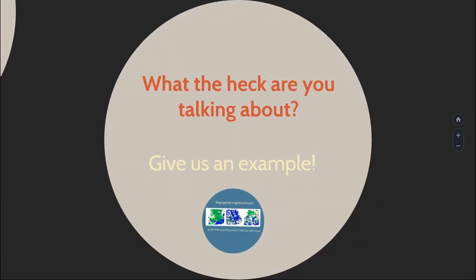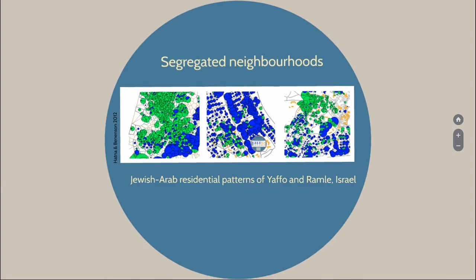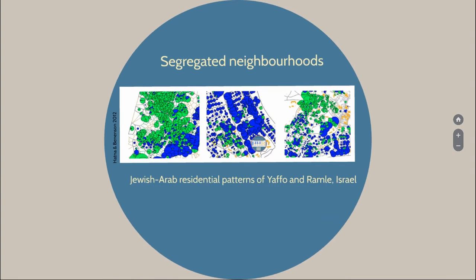That's a complicated subject, so let's give an example. Here are Jewish-Arab residential patterns in two neighborhoods in Israel. When you look at them, the logical conclusion is they absolutely hate each other. This may be the case, but maybe there's another reason why they are so segregated.